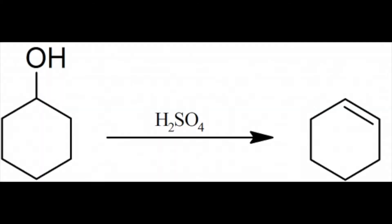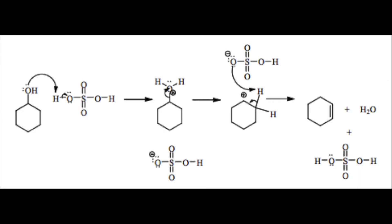The purpose of this experiment was to prepare cyclohexene from cyclohexanol using acid-catalyzed dehydration. Here is the reaction performed in this experiment, along with its mechanism.